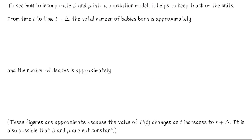Let's see how to incorporate beta and mu into our population model. It's really helpful here to keep track of the units, because as we saw, the units were a little bit complicated. So let's see what happens to our population as we go from time t to time t plus delta — how does it fluctuate? Well, we're going to add some number of babies. So how many babies are born during this time period? This is going to be an approximation, because we're taking a step from t to t plus delta.